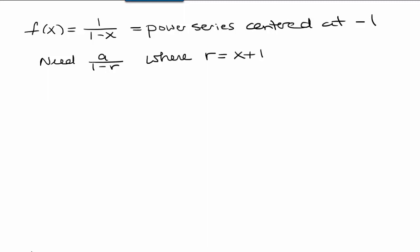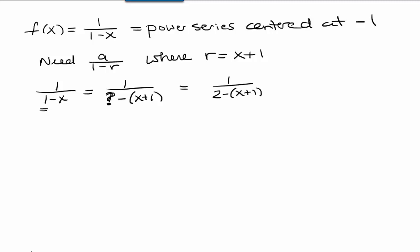So what we're going to do is figure out how to rearrange 1 over 1 minus x algebraically so that it's equal to something over 1 minus, and then we're going to have our x plus 1 be our r this time. Our goal here is to have this x plus 1 expression show up in our power series so we know the center is negative 1. If you distribute the negative, we're going to get negative x minus 1. So we want something where if we subtract that number minus 1, we get the 1 we started with. So let's use 2: 2 minus x plus 1 would in fact equal 1 minus x. Except this 2 here — we need this to be a 1 in order to fit the pattern of a over 1 minus r.